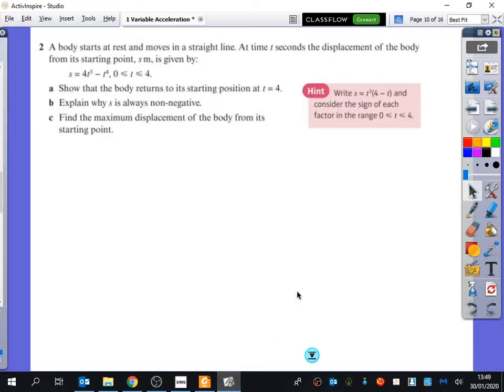So this was one of the homework questions, right? And it was about maximum displacements and things like this. A body starts at rest and moves in a straight line. At time t seconds, the displacement of the body from its starting point is given by this.